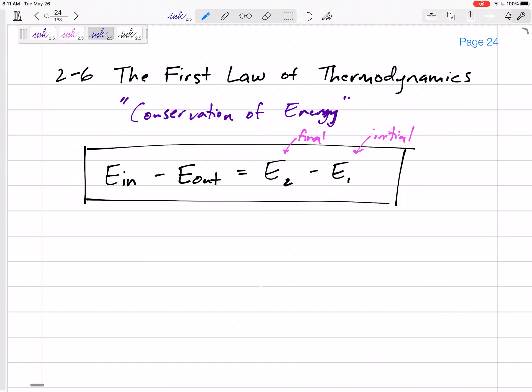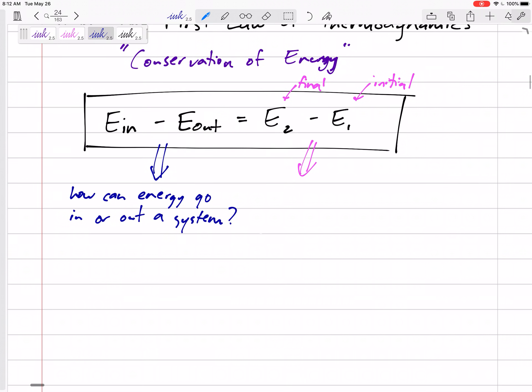But the idea is that the left hand side of our equation is energy going in or out of our system, energy crossing the boundary, whereas the right hand side of our system is the change in energy. So let's think about the left hand side first and say, how can energy go into or out of a system? How can energy cross boundaries?